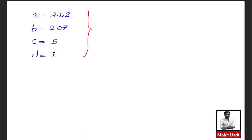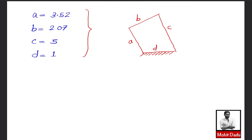The proportional link lengths for the four-bar mechanism are: d = 1, a = 3.52, b = 2.07, and c = 5 units. The four-bar mechanism can now be constructed at the initial angle θi = 30°. This completes the analytical synthesis using the Freudenstein equation.